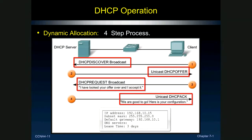So here are our four DORA steps summarized: the client workstation sends out the broadcast Discover; the server responds with an Offer; the client chooses that server and sends a Request; and finally the DHCP server sends the Acknowledgement and authorization — 'use these addresses, here they are.'